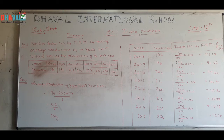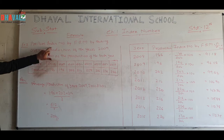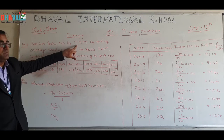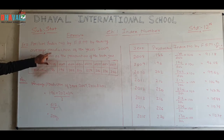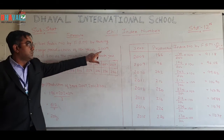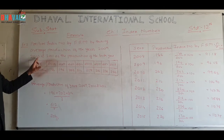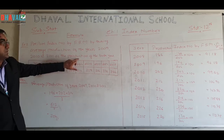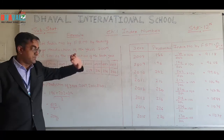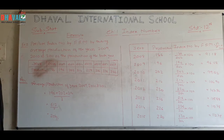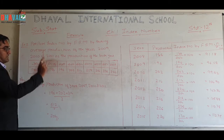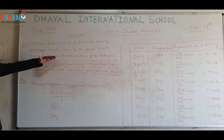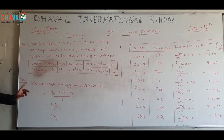Now I start Example 2. The question: prepare the index number by Fixed Base Method, making the average production of years 2009, 2010, and 2011 as the production of the base year. So we have 3 years mentioned: 2009, 2010, and 2011. We will first calculate the base. So we start the answer.